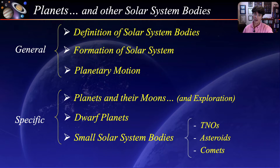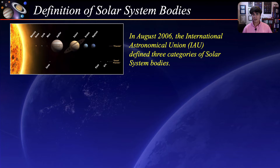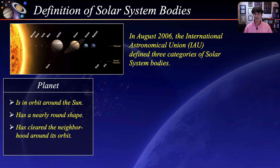Until 2006, there had been no official definition for the various solar system bodies. In August of 2006, the International Astronomical Union defined three categories of solar system bodies. A planet is a celestial body that is in orbit around the sun. It has sufficient mass for its self-gravity to overcome rigid body forces so that it assumes a nearly round shape, and it has cleared the neighborhood around its orbit.